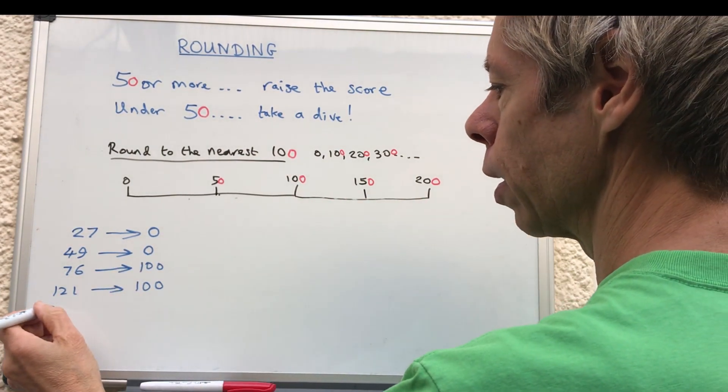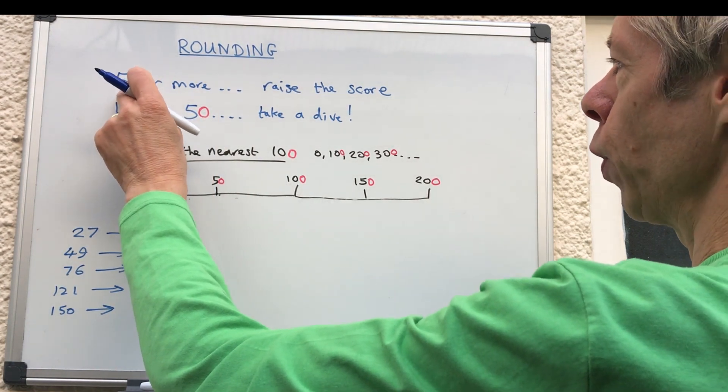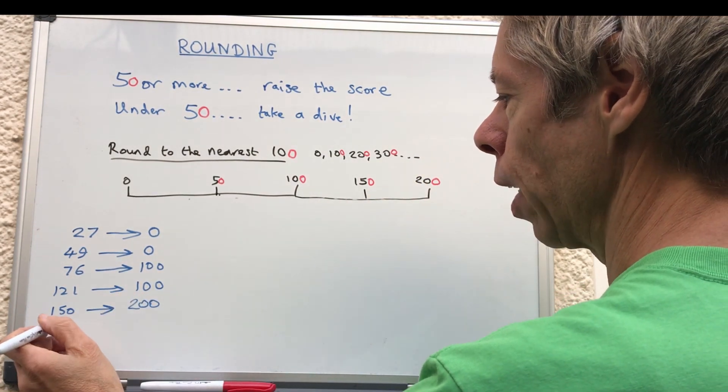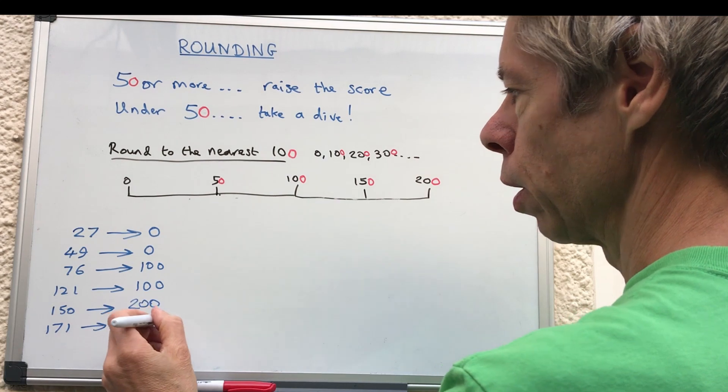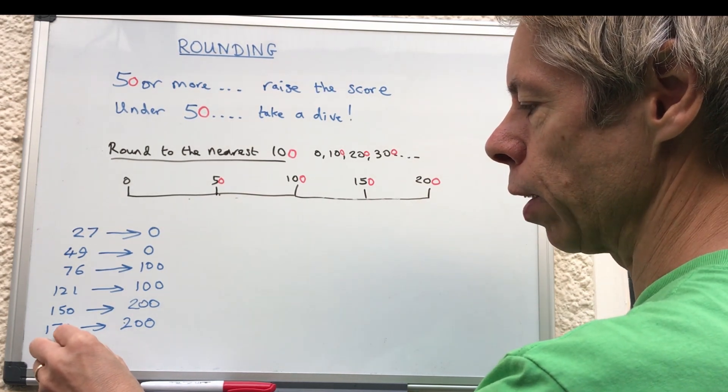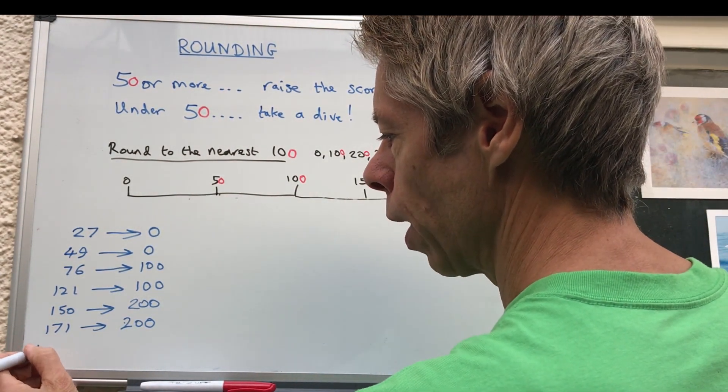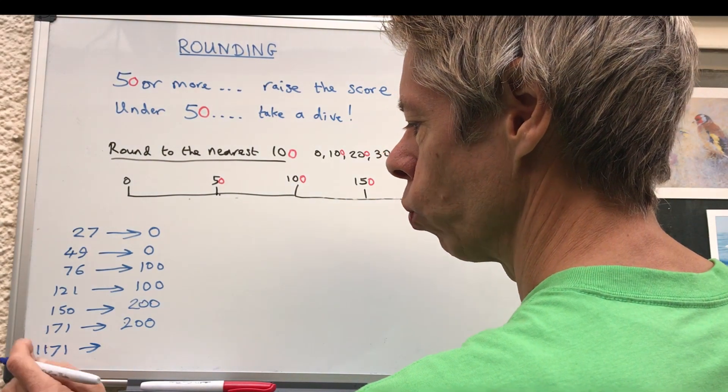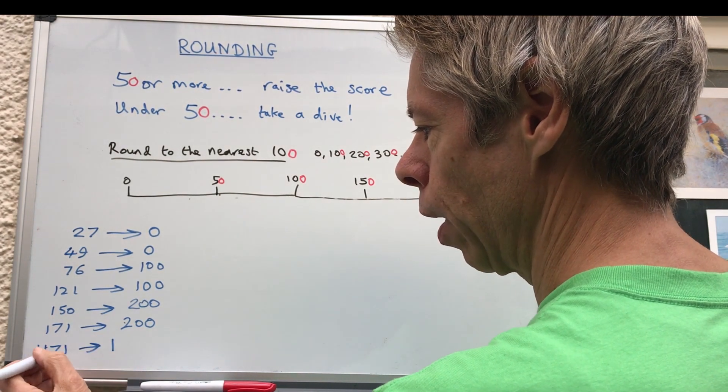So if we had 150, it's now 50 or more raise the score. So it's 50 or more, so we're going to go up to the next 100, which is 200. And obviously anything else in between, like for example 171, that's clearly there, so that goes up to 200. So you could always draw this little diagram out to help you when you're doing rounding, or you just think that's more than 50, so I'm going to put it up to the next 100. And obviously if you had something like 1171, you don't have to worry about the 1000 bit, only worry about that if it's 900 or something. So 1171, the 1000 goes in automatically, then 171 goes to 200.